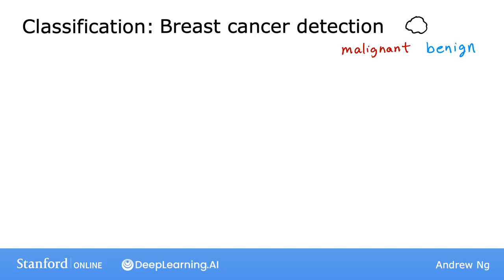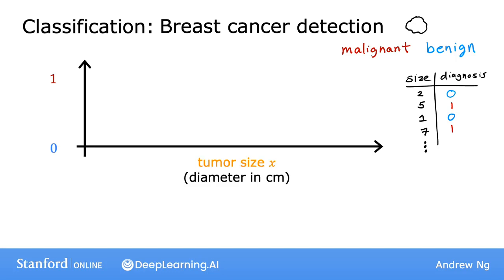Some of my friends have actually been working on this specific problem. Maybe your dataset has tumors of various sizes, and these tumors are labeled as either benign, which I will designate in this example with a 0, or malignant, which I'll designate in this example with a 1.